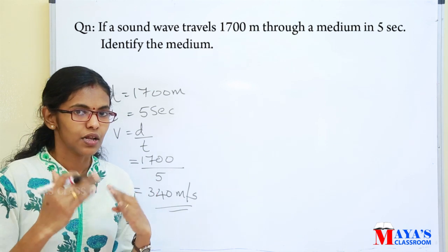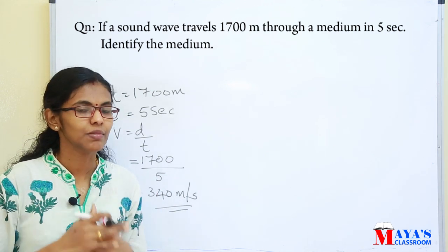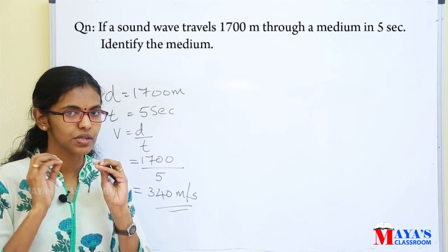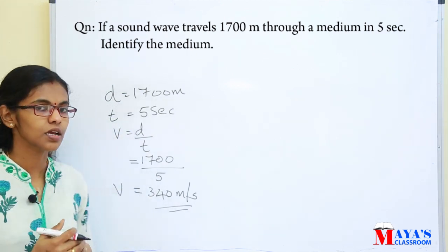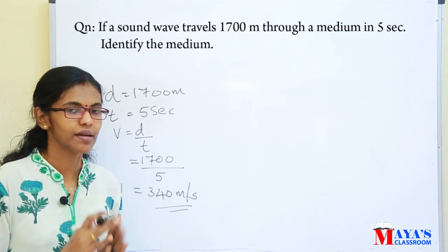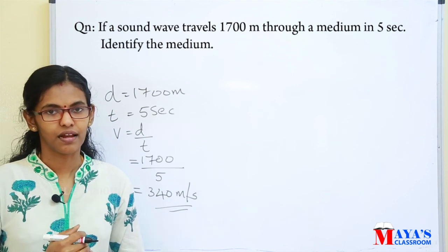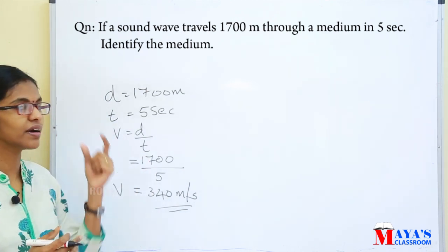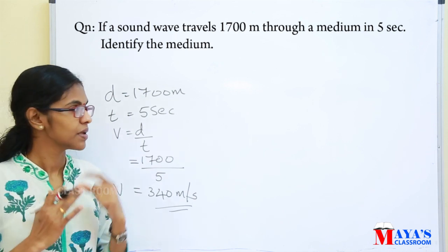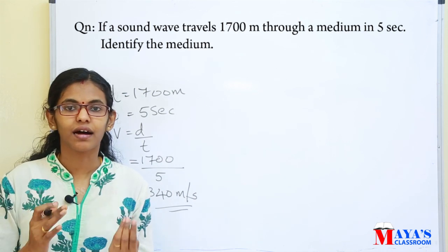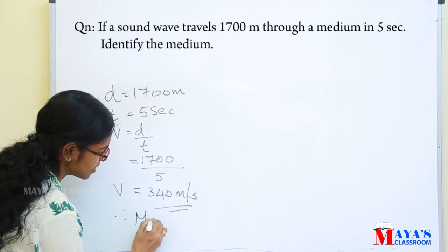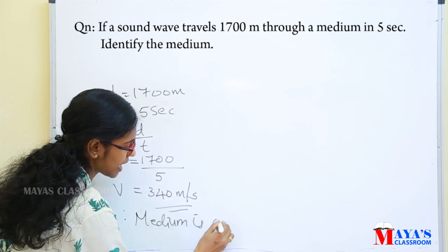The velocity is 340 meters per second. The velocity of sound in air is 340 meters per second. Therefore, the medium is air.